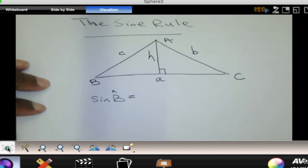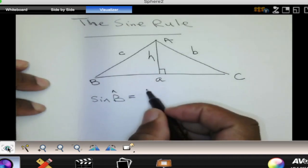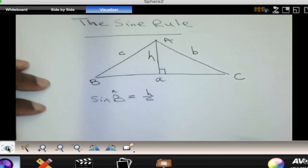Remember, sine of an angle in a right angle triangle is given by the opposite side divided by the hypotenuse.